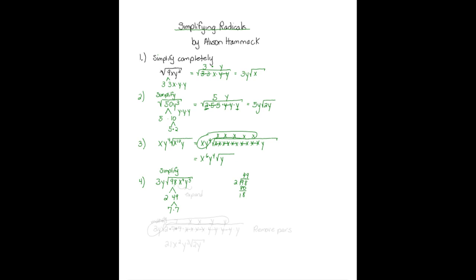So let's rewrite this expression. We have three y times the square root, and let's list the prime factorization of 98 least to greatest with pairs together. Then we expand x to the fourth as four x's and y to the fifth as five y's. Now we take out the pairs: the sevens are a pair — one seven comes out. One x and another x come out as a pair, and a y and one more y come out as a pair.